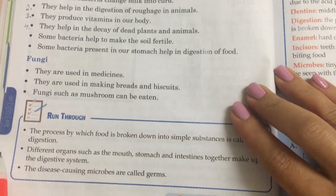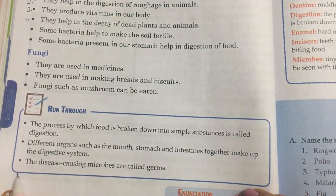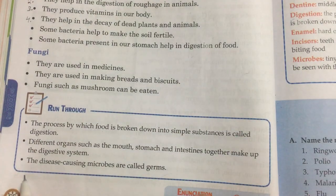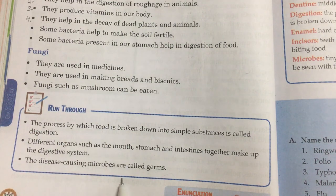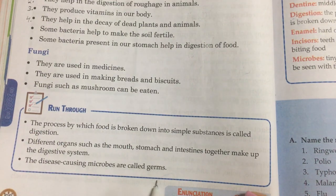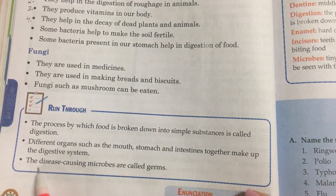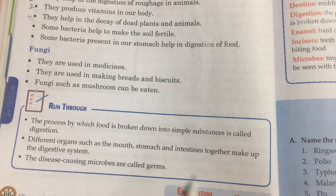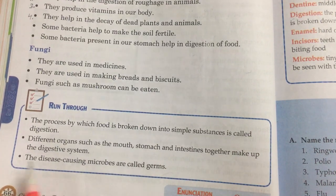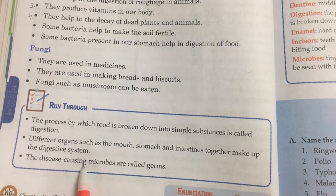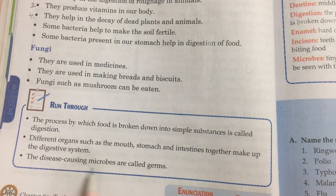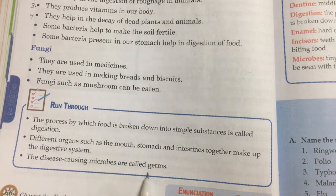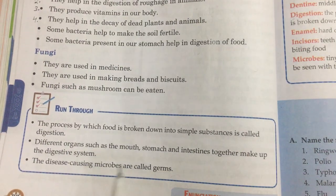Run through: The process by which food is broken down into simple substances is called digestion. Different organs such as the mouth, stomach and intestine together make up the digestive system. The disease-causing microbes are called germs.